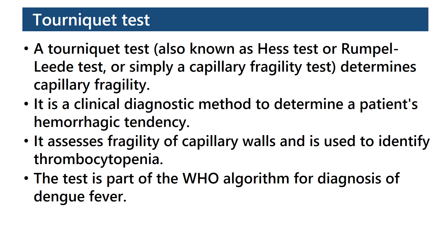A tourniquet test, also known as the Hess test or Rumpel-Leede test, or simply a capillary fragility test, determines capillary fragility. It is a clinical diagnostic method to determine a patient's hemorrhagic tendency and assesses fragility of capillary walls.